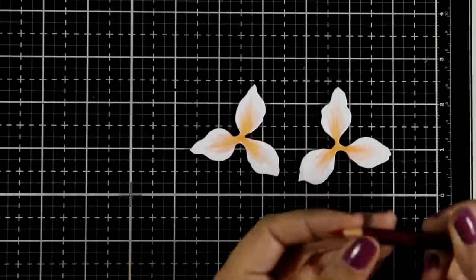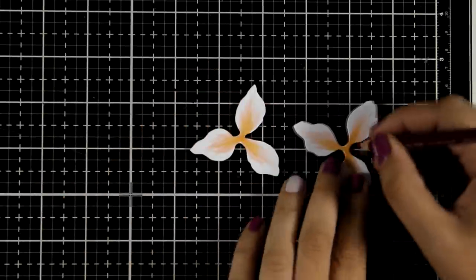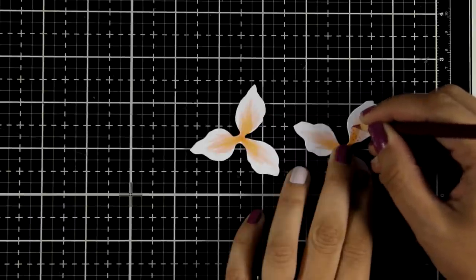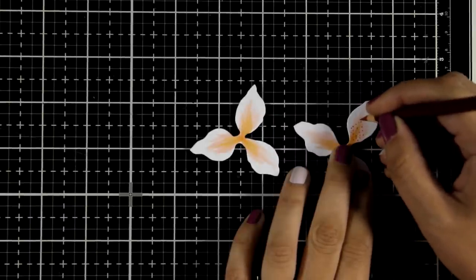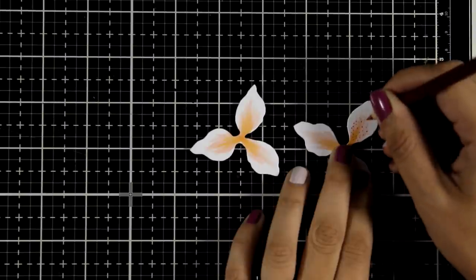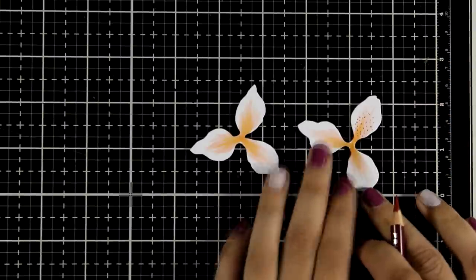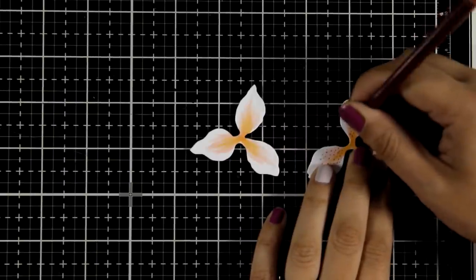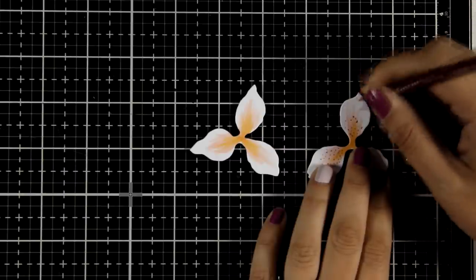Now I'm using a Prismacolor pencil that I have sharpened into a very fine tip and I'm going to use that to add some dots on my petals. Now since this is a project that is going up on my wall, I want to be quite detailed. I'm taking my time, enjoying the process. After all this is a project that I will be looking at every day.